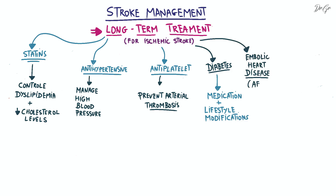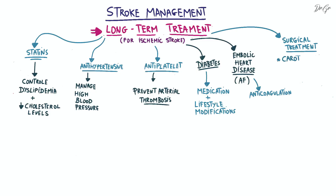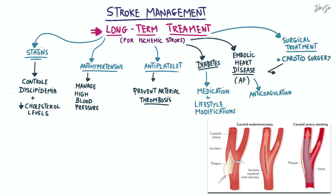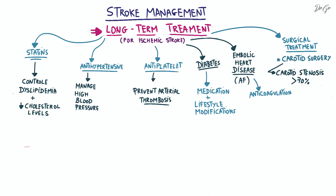In cases of embolic heart disease, especially atrial fibrillation, anticoagulation therapy may be necessary to reduce the risk of blood clots. Surgical interventions such as carotid surgery may be considered if there is significant carotid stenosis, defined as narrowing of the carotid artery exceeding 70% of its diameter, to improve blood flow to the brain and reduce the risk of future strokes. Ongoing clinical and paraclinical surveillance is essential to monitor the individual's condition, identify any complications, and prevent recurrence.